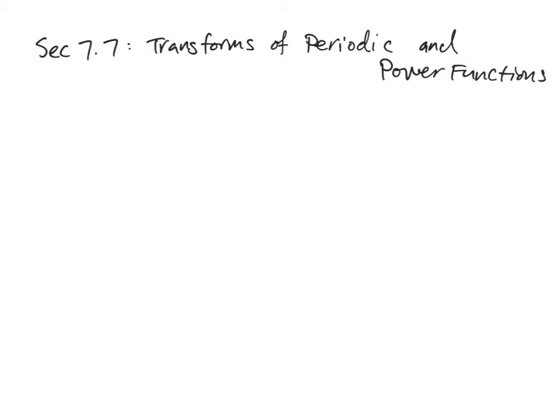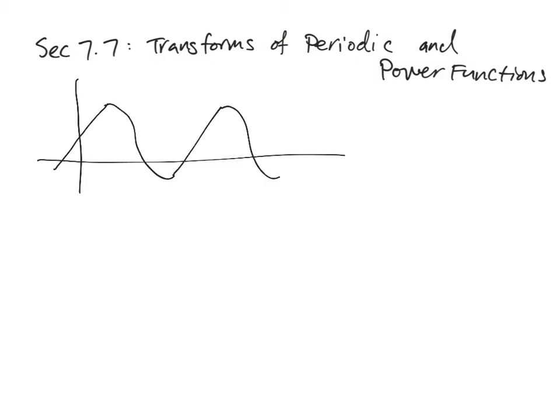A periodic function is a function that just repeats over and over again, just like a sine function. A sine function is a common example of a periodic function, but it could be anything that repeats over and over again — we could do something like this, or whatever.